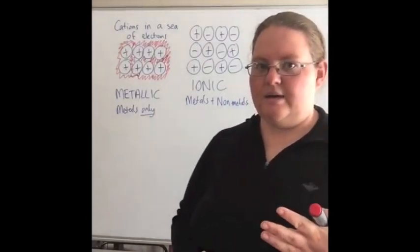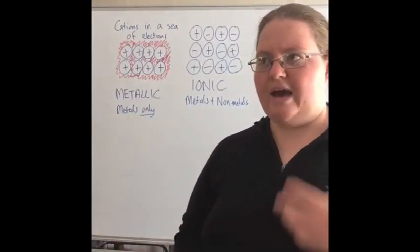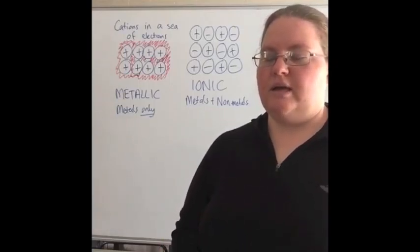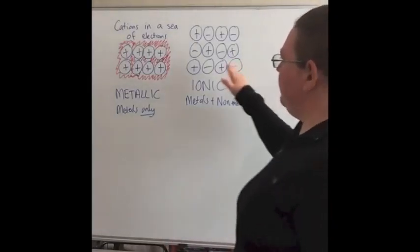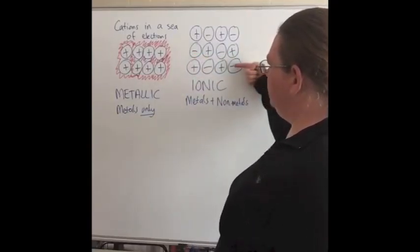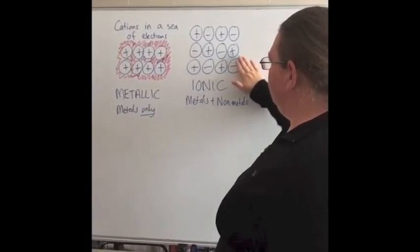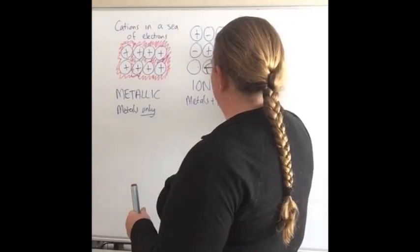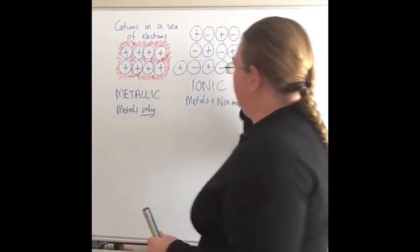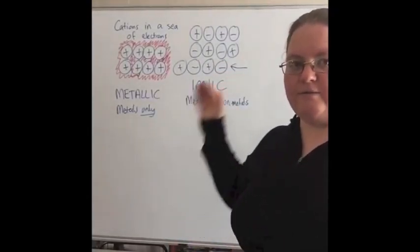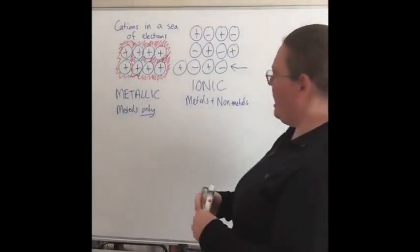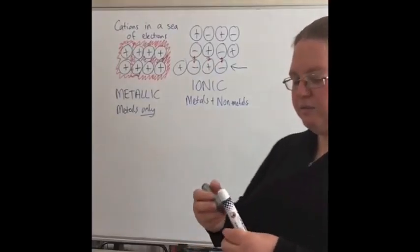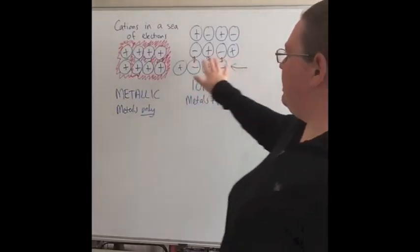Ionic compounds are usually quite strong but brittle. To explain brittleness: if you shift one row of ions across, the alignment changes so that negatives end up next to negatives and positives next to positives. Those like charges repel each other, which is why the compound breaks — that's the brittle property.